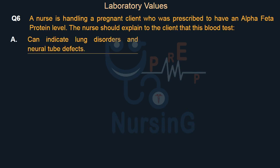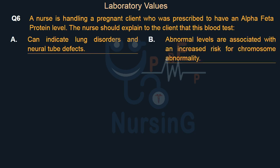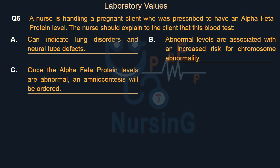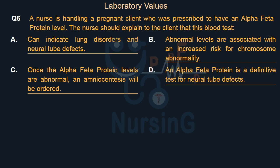Option A: Can indicate lung disorders and neural tube defects. Option B: Abnormal levels are associated with an increased risk for chromosome abnormality. Option C: Once the alpha-feta protein levels are abnormal, an amniocentesis will be ordered. Option D: An alpha-feta protein is a definitive test for neural tube defects.